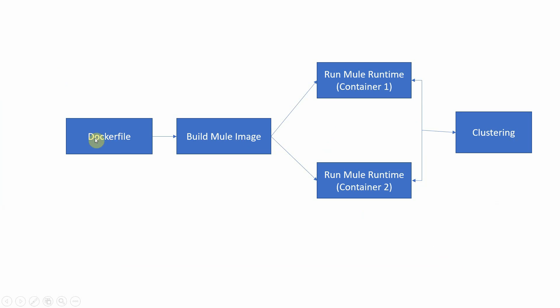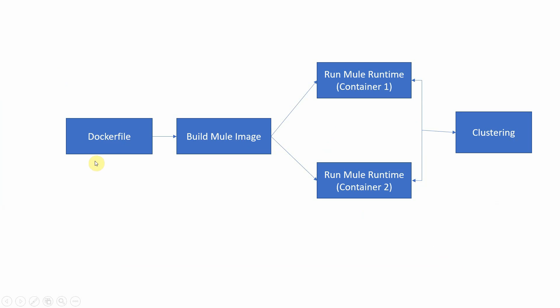We will create a Dockerfile — it's a description file containing instructions like how to create a Docker image and what it should contain, such as JDK and Mule Runtime engine. From the Dockerfile we build one Mule image, and from that image we will run two Mule Runtime containers — Mule Runtime 1 and Mule Runtime 2 — then register both into Anypoint Platform and cluster them together.